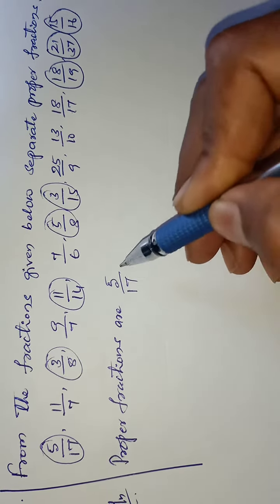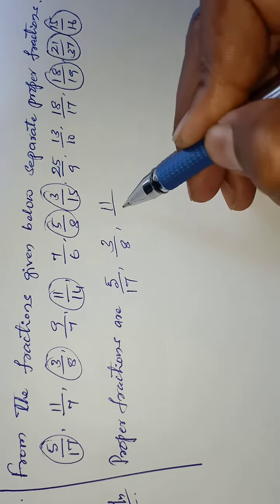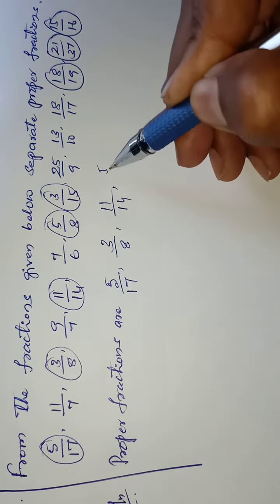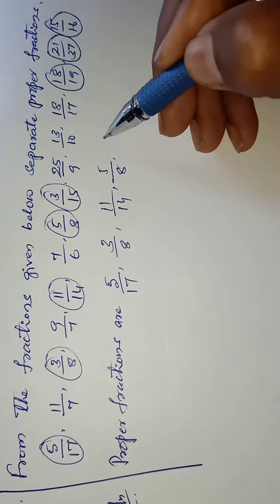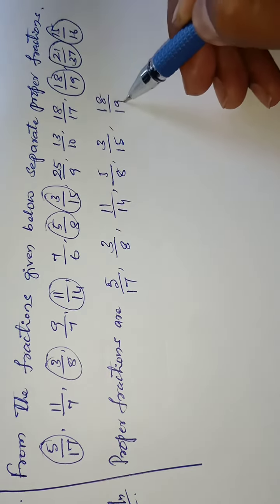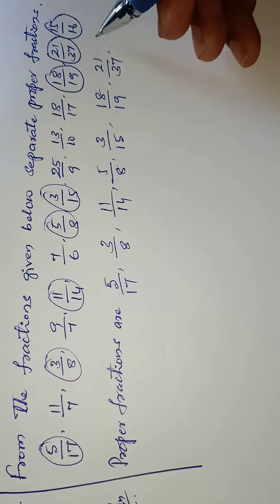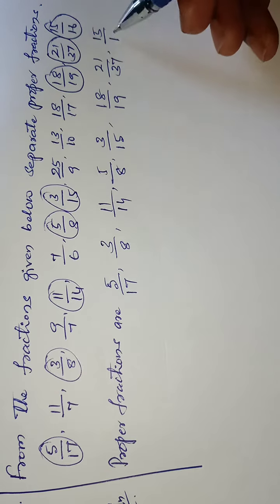5 divided by 17 comma 3 divided by 8, 11 divided by 14, 5 divided by 8, 3 divided by 18, 3 divided by 15, 18 divided by 19, 21 divided by 37, and 15 divided by 16.